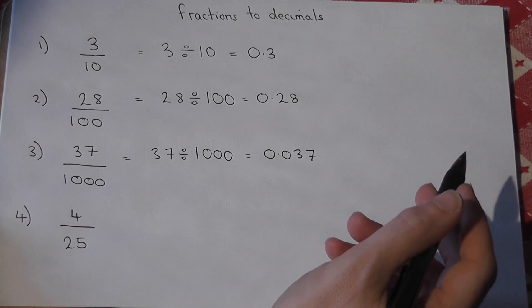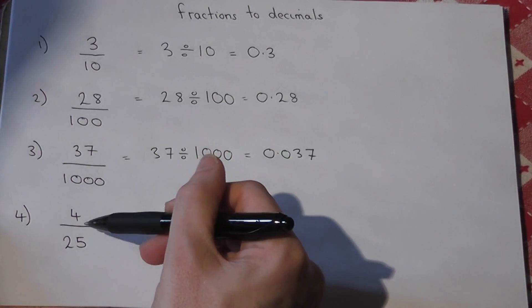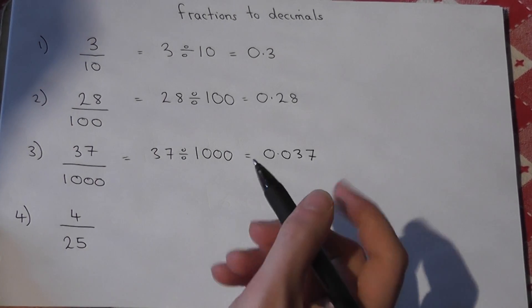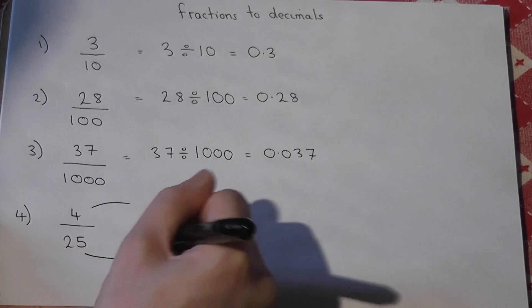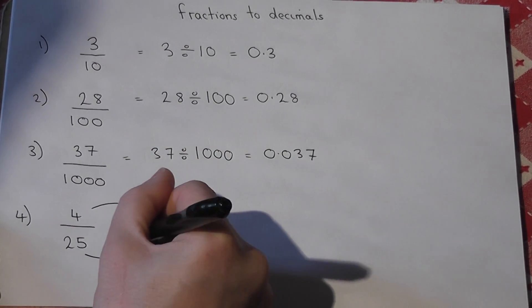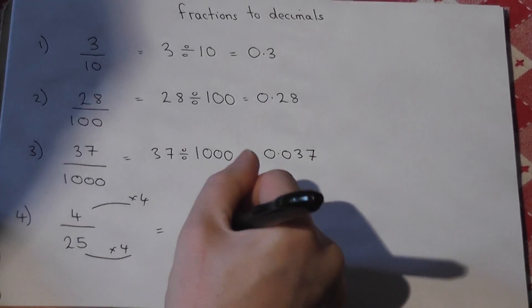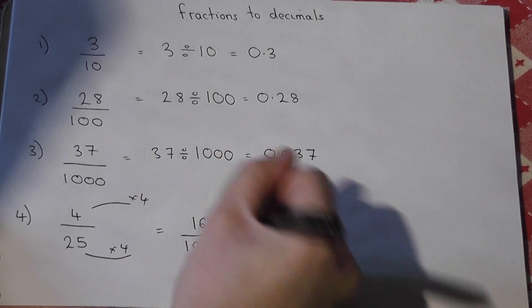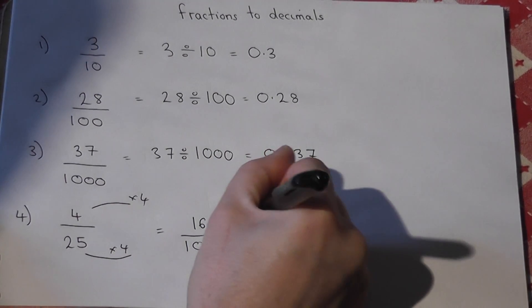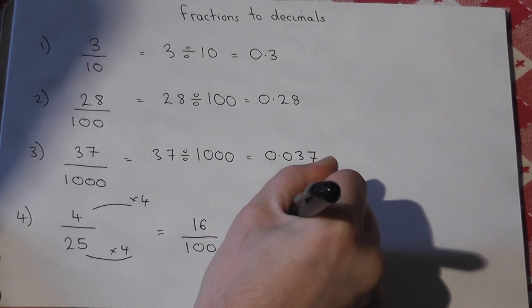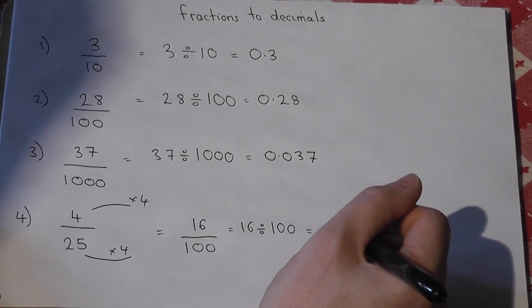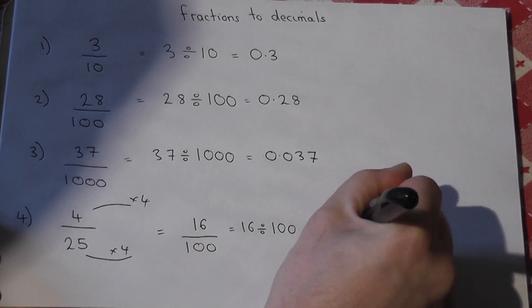Now sometimes it's less obvious what to do. For 4 over 25, it's not divided by 10 or 100 or a thousand. However, we can convert the fraction first by multiplying by 4 to an equivalent fraction. And if we times by 4, it becomes over 100, and 4 times 4 is 16. So this just means 16 divided by 100. So we must move 16 two places to the right. So start at 16, one place is 1.6, two places is 0.16.